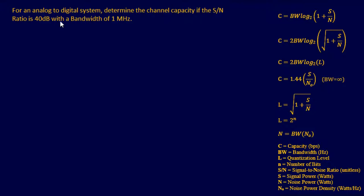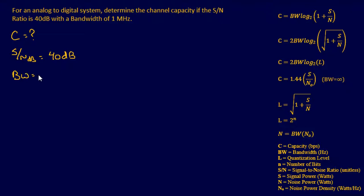Let's start with an easy problem. For an analog-to-digital system, determine the channel capacity if the signal-to-noise ratio is 40 decibels with a bandwidth of 1 megahertz. We're looking for channel capacity C. We have a signal-to-noise ratio in decibels — keep in mind it's in decibels, that's very important — and a bandwidth of 1 megahertz.